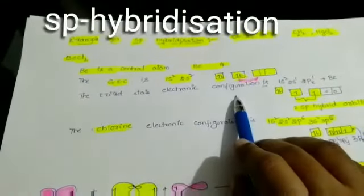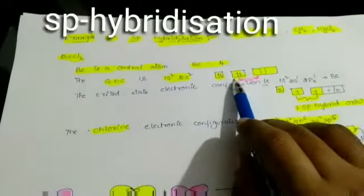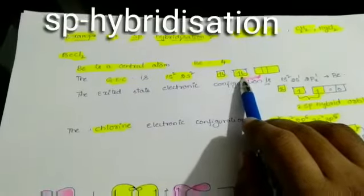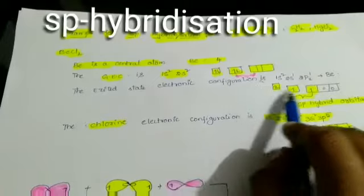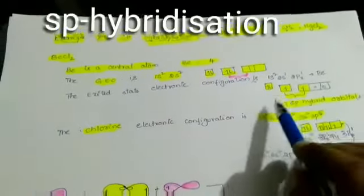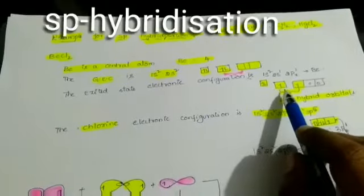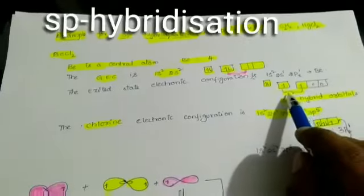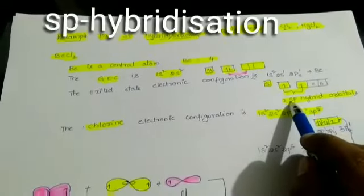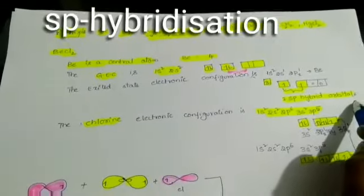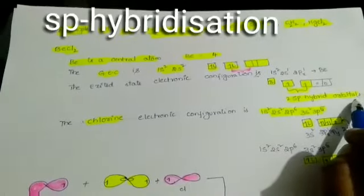In the excited state electronic configuration, one electron jumps from the 2s orbital to the 2p orbital. So the configuration becomes 1s², 2s¹, 2px¹. The 2s orbital has 1 electron and the p orbital has 1 electron. These 2 electrons intermix to form 2 SP hybrid orbitals, and this is called SP hybridization.